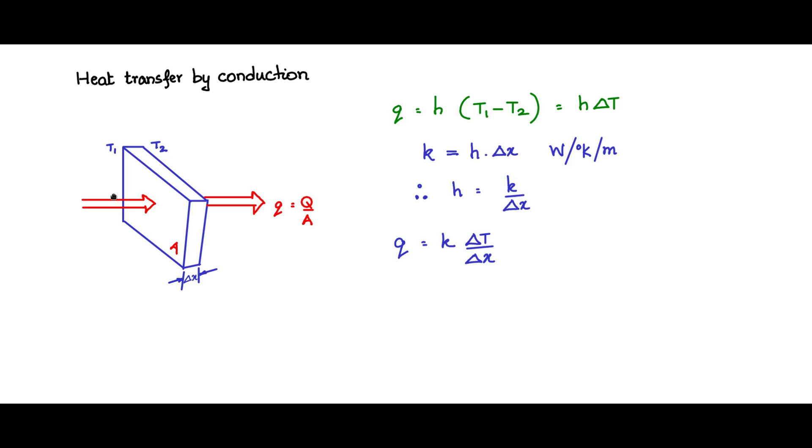If you multiply throughout by the cross-section area of the block, you will obtain Q which is K into A delta T by delta x. And from here you can see that R theta, the thermal resistance, is nothing but delta x by KA. Now observe that the thermal resistance is inversely proportional to A, the cross-section area orthogonal to the flow of heat power.